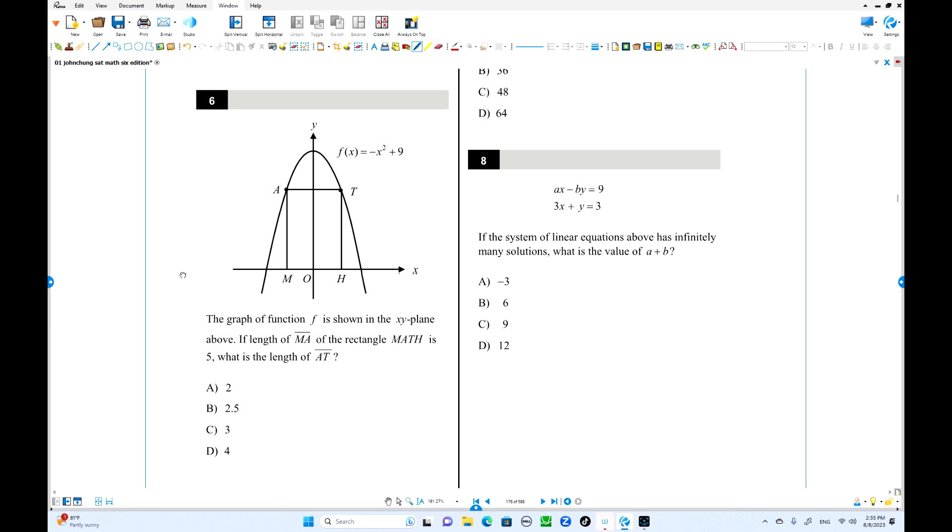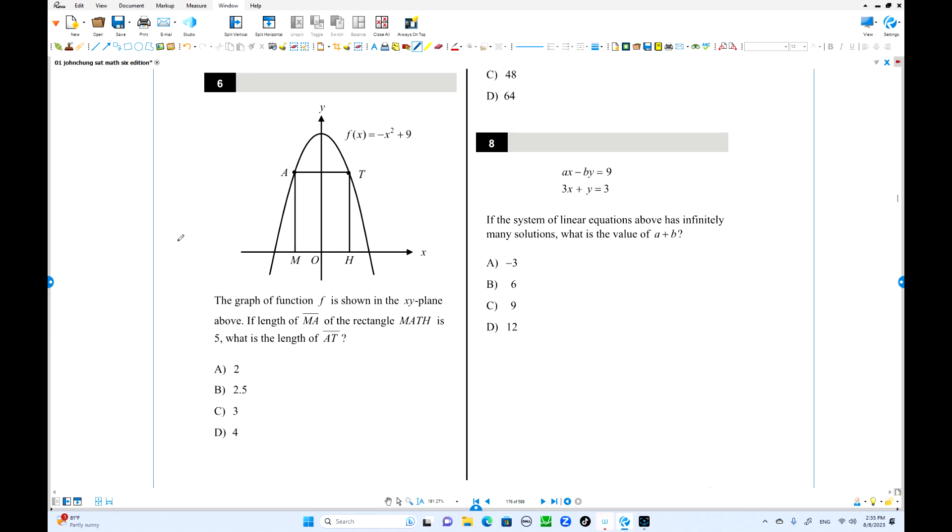Number six: We have a quadratic, y equals negative x squared plus 9. The length of MA is 5, this length is 5. But what is the length of AT? This length. This is symmetry in the y-axis. Put this number in there, you can find the x-coordinate. If this is 5, 5 equals negative x squared plus 9. But x squared equals 4, so x is plus minus 2. So this is negative 2, the other one is 2. From here, you can find the length of AT. 2 minus negative 2 is 4. 4 is the answer.